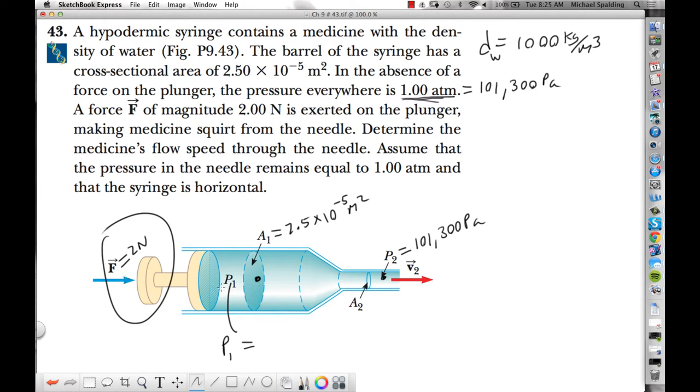Well, look, what was P1 before the force got applied? It was 101,300 pascals. This was the pressure in the fat part of the syringe before the force came along.